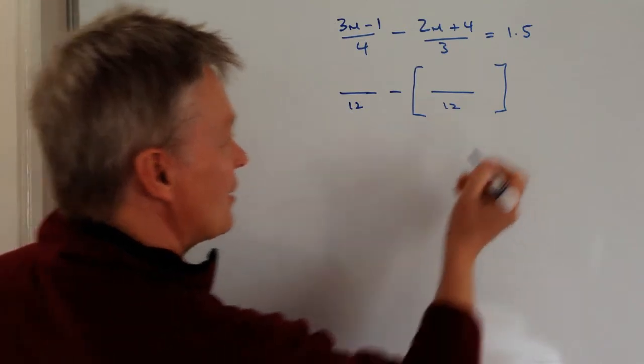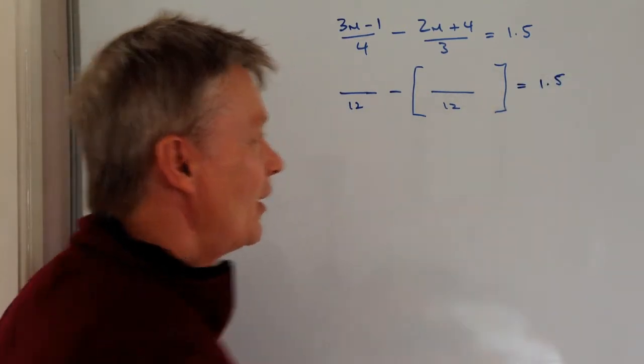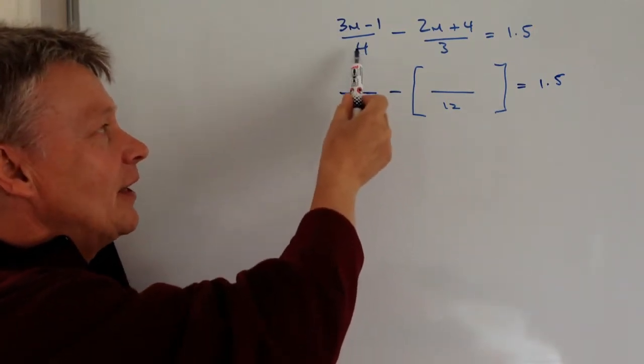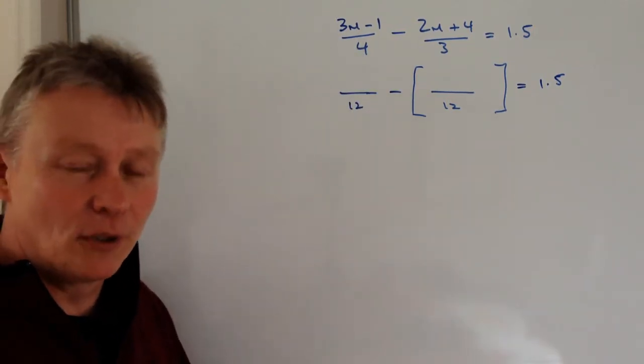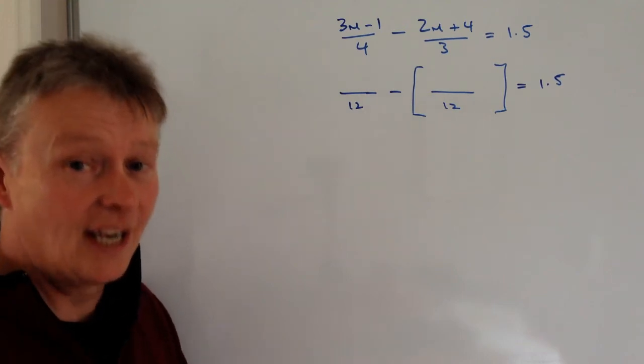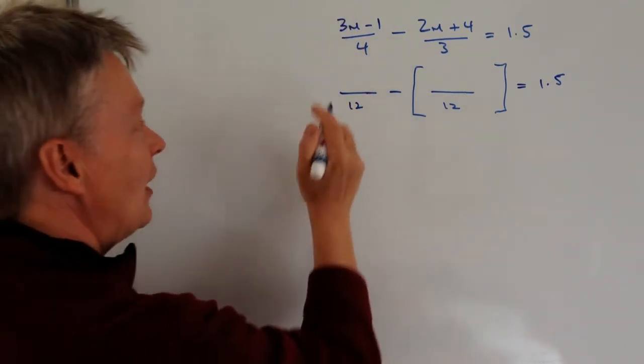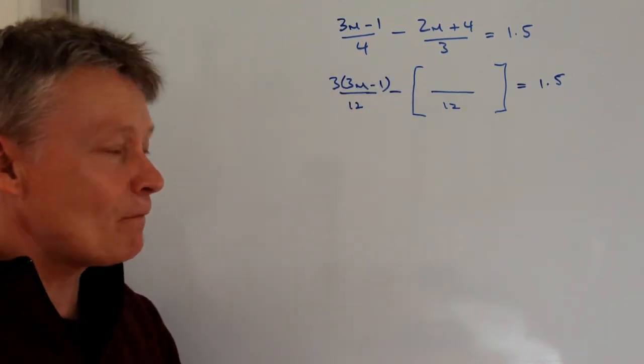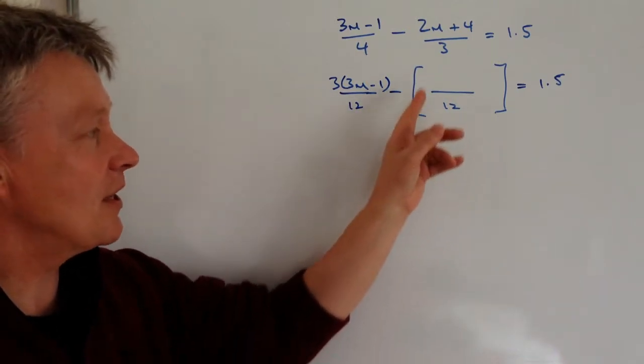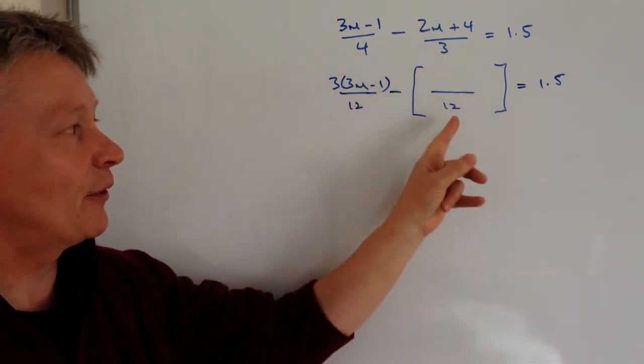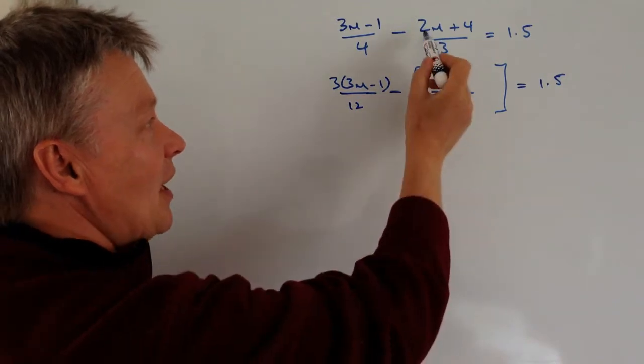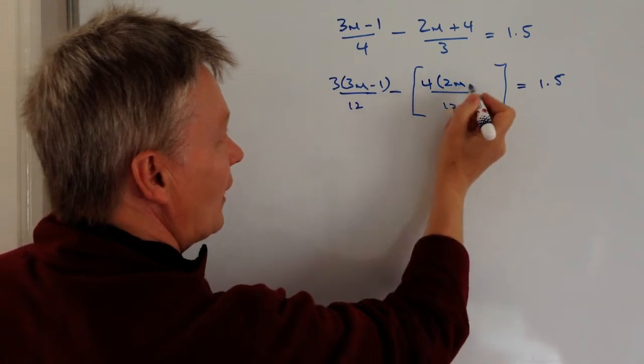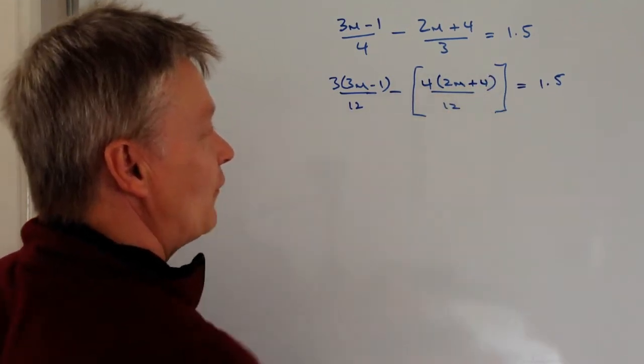So let's have a go at filling in the bits that go with this equation. If I look at this first part of it, I've got 4 and 12. Well, if I multiply 4 by 3, I get 12. So I'm going to multiply the top terms by 3 as well. The second bit is I've multiplied 3 by 4 to get to 12. So this time, I'm going to multiply those top terms by 4, and it becomes 4 brackets 2m plus 4.